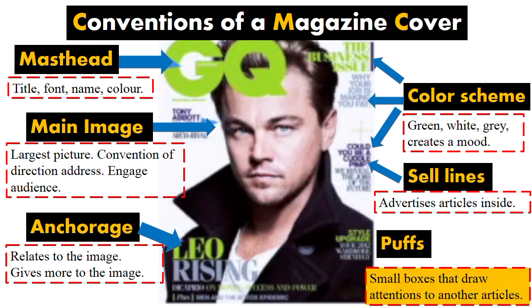And finally, you've got puffs. This front cover doesn't have a puff, but a puff is often a box — it could be square, circular, or any shape — and it's just a box or shape that has a sell line within it. Actually, you've got one on the front cover that I'm going to ask you to identify.